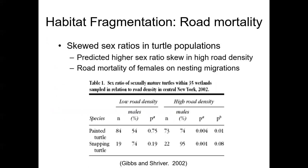Let's focus on habitat fragmentation as it relates to road mortality. This is a clever study conducted by James Gibbs and Shriver in the northeast part of New York, where they investigated skewed sex ratios in turtle populations. Gibbs predicted a higher sex ratio skew in areas with high road density. The prediction hinges on the natural history of turtles — you would expect higher road mortality in females, because females are the ones leaving wetlands and going to uplands to lay eggs on land. They studied 35 wetlands with two species: the painted turtle and the snapping turtle, in areas representing both low and high road density.